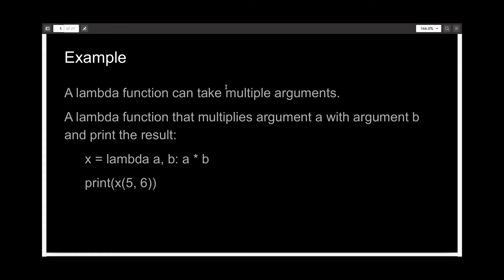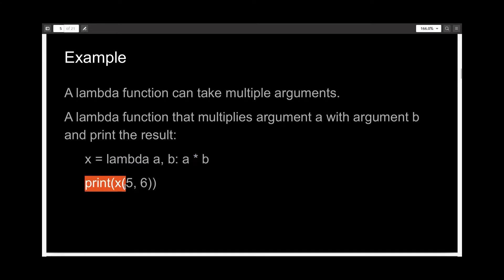The second program is a Lambda function with multiple arguments. Here I'm creating a Lambda function and storing it to a variable X. It has two arguments, A and B, and the expression is A multiplied by B. So when I write print(X(5, 6)), the function will compute 5 multiplied by 6, which is 30.